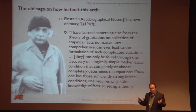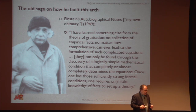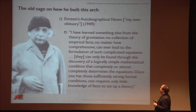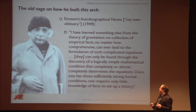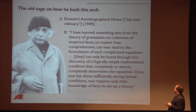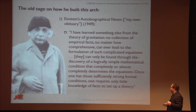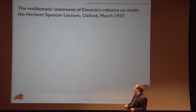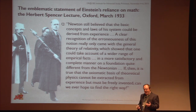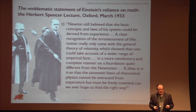Now the question with any arch is: how did he build that? How did he get that beautiful arch? I want to show you what the old sage said about it later on. In his autobiographical notes — which Einstein called, with his self-deprecating sense of humor, 'my own obituary' — he says: 'I have learned something else from the theory of gravitation: no collection of empirical facts, however comprehensive, could ever lead to the formulation of such complicated equations. They can only be found through the discovery of a logically simple mathematical condition that completely or almost completely determines the equations.' This is a very familiar theme for the later Einstein. The emblematic text in which he expounds on his heavy reliance on mathematics is the Herbert Spencer lecture he gave in Oxford in 1933.